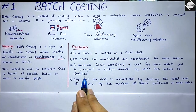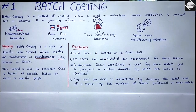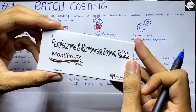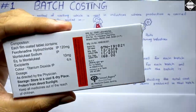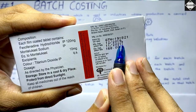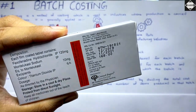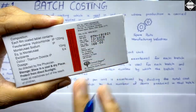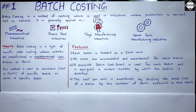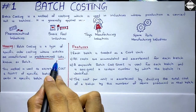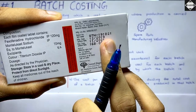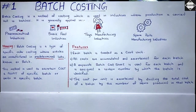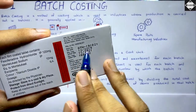Each batch is assigned a specific number by which it is identified. Here's a real example — on the back of this medicine strip you can see a batch number like GTN191821. This specific unit belongs to that batch, which may have contained 10,000 medicines. The company decides the pre-determined quantity per batch, and each batch gets a unique number for identification — the same way each job gets a number in job costing.